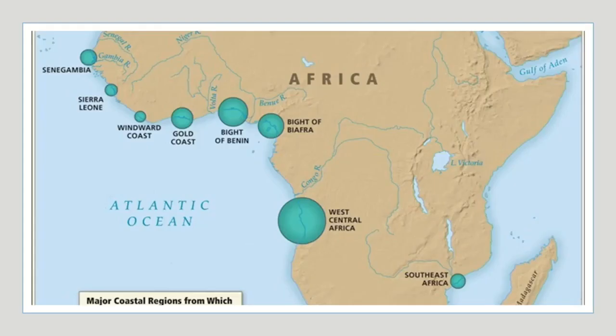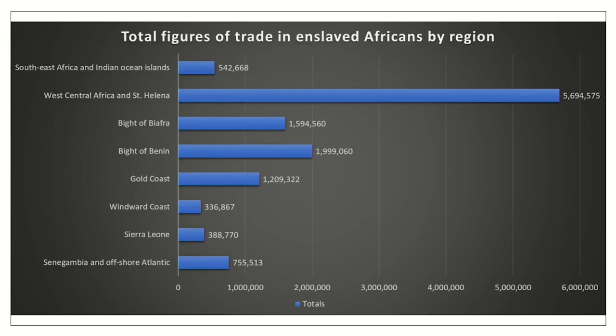It is also important to differentiate, since not all regions are equally participating. The bigger circle for West Central Africa represents the region of Atlantic Africa that supplied the most enslaved people — its effects will be more significant than, say, Sierra Leone where only a relatively small number of people were enslaved. The Bight of Benin, Bight of Biafra, and the Gold Coast or modern-day Ghana were also very significant. Depending on how many people a region was trading, they will be affected differently.